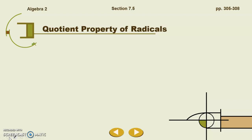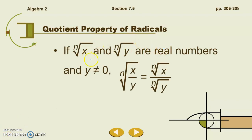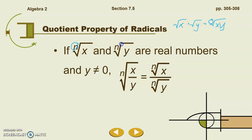We're going to start with the quotient property of radicals. This is related to the product property of radicals. The quotient property of radicals says that if the nth root of x and the nth root of y are real numbers, and y is not equal to 0, then the nth root of x divided by y is the same thing as the nth root of x divided by the nth root of y. The indexes do need to be the same, whether it's square root or cubed root.